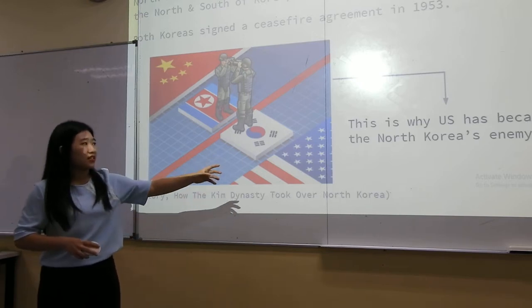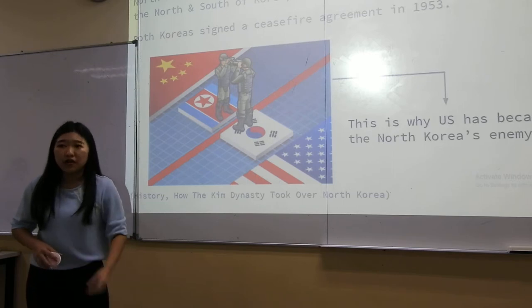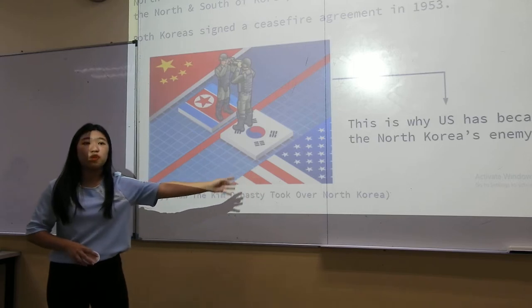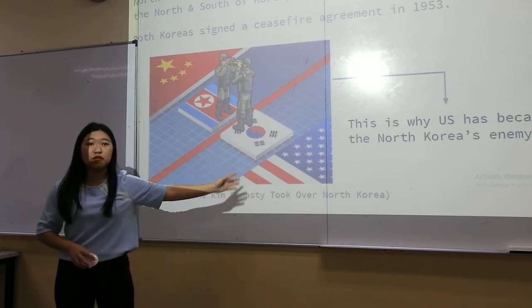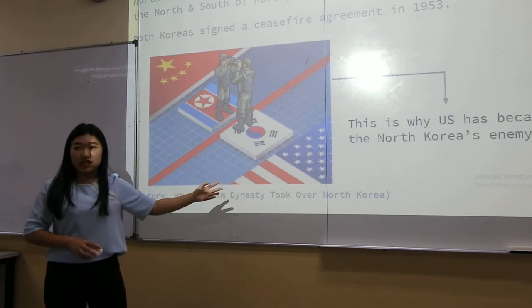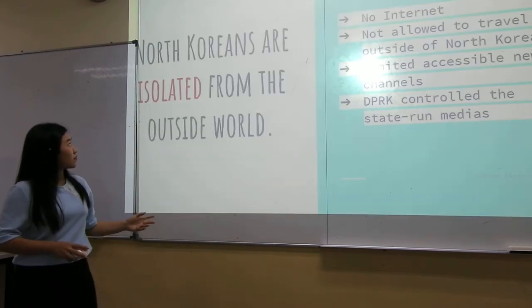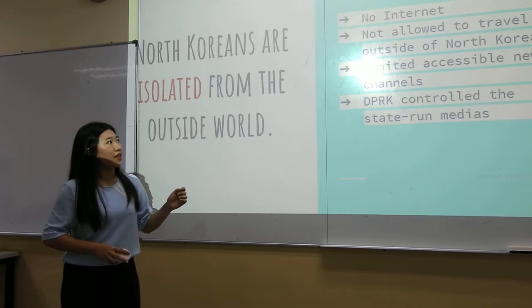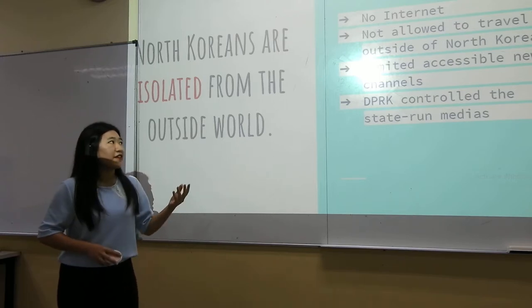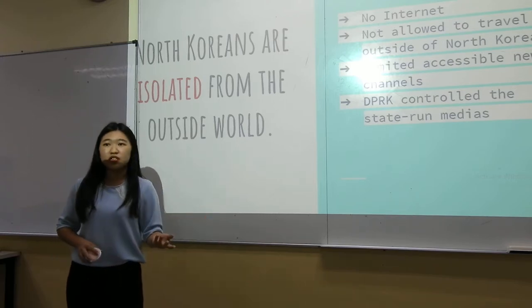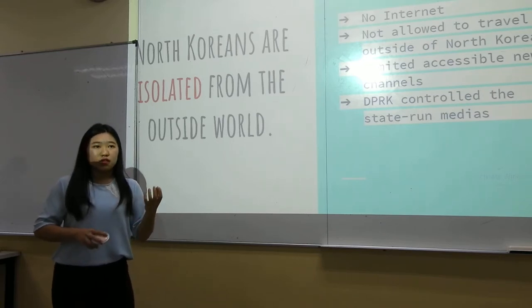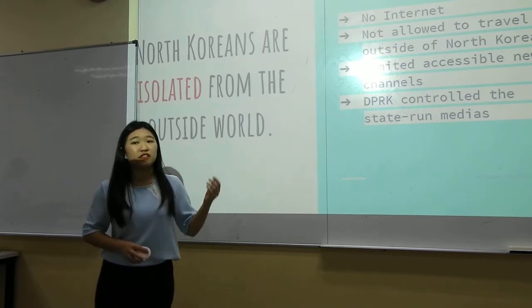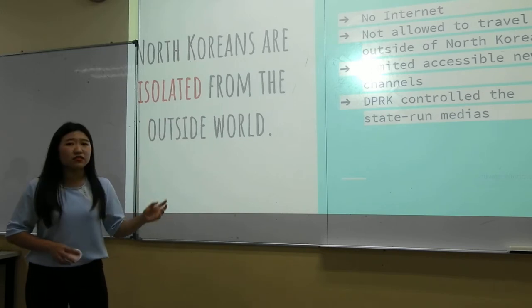The US became North Korea's enemy as well, because South Korea was being controlled by the US — so when North Korea fought South Korea, they were also fighting the United States. Back when there was no internet, North Koreans were not allowed to travel outside their country and had limited accessible news channels. The only source of information was state-run media, which was controlled by the DPRK. This is how North Koreans were isolated from the outside world.